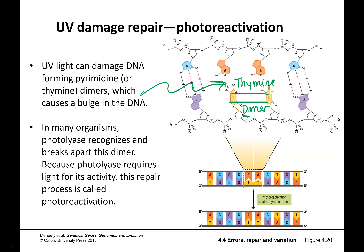Thymine dimers are repaired by something called photoreactivation — an enzyme activated by light called photolyase. Photolyase recognizes this dimer and essentially breaks the bond between the two thymines and reforms the bonds with the adenines. So that sort of damage can be repaired.